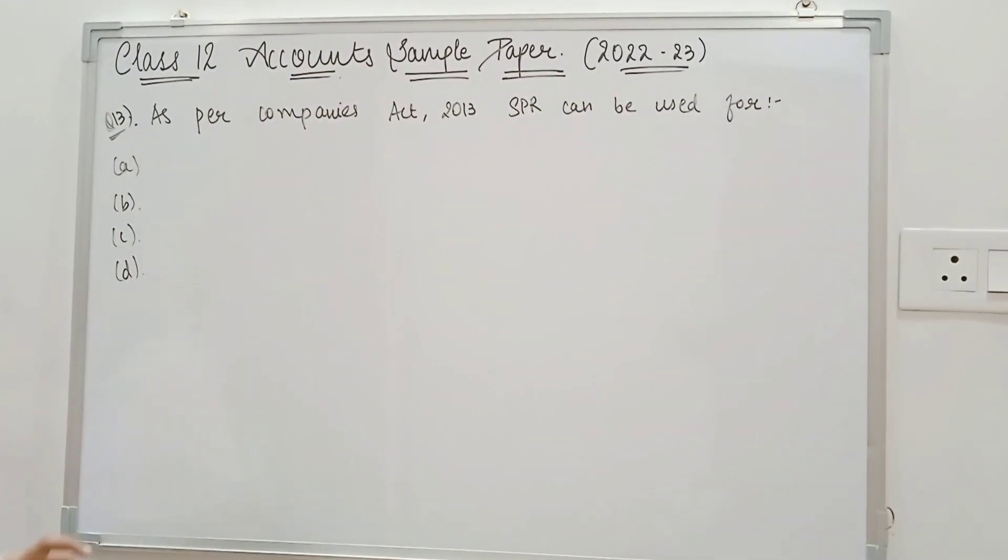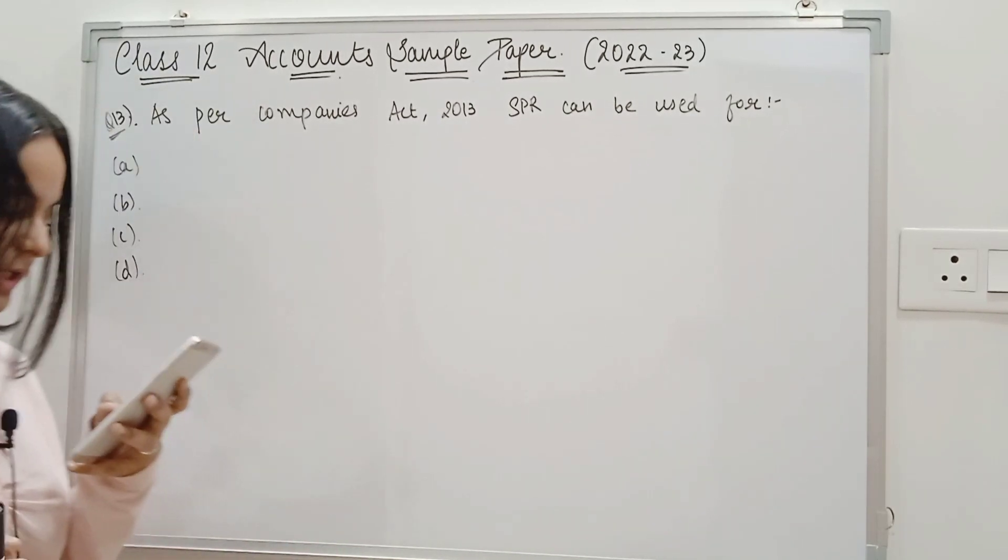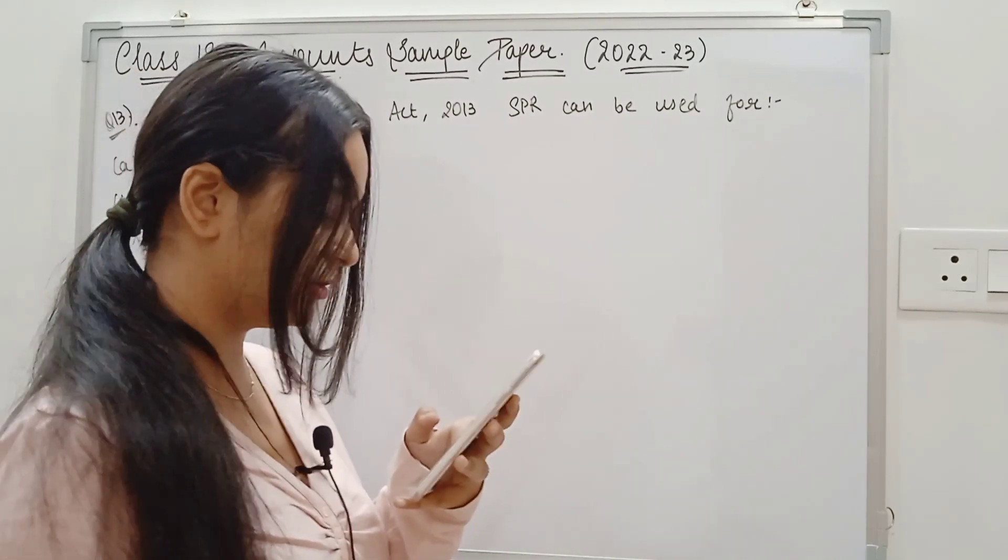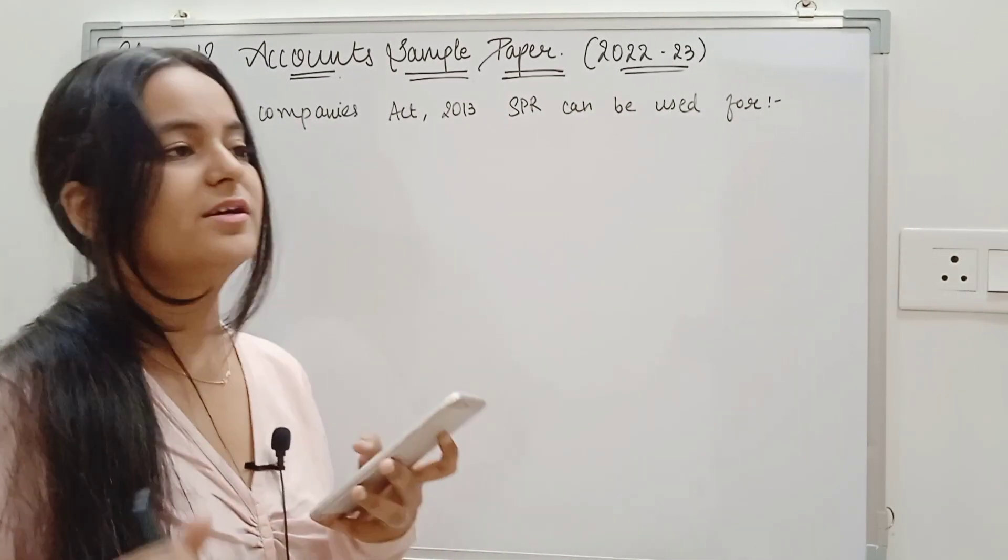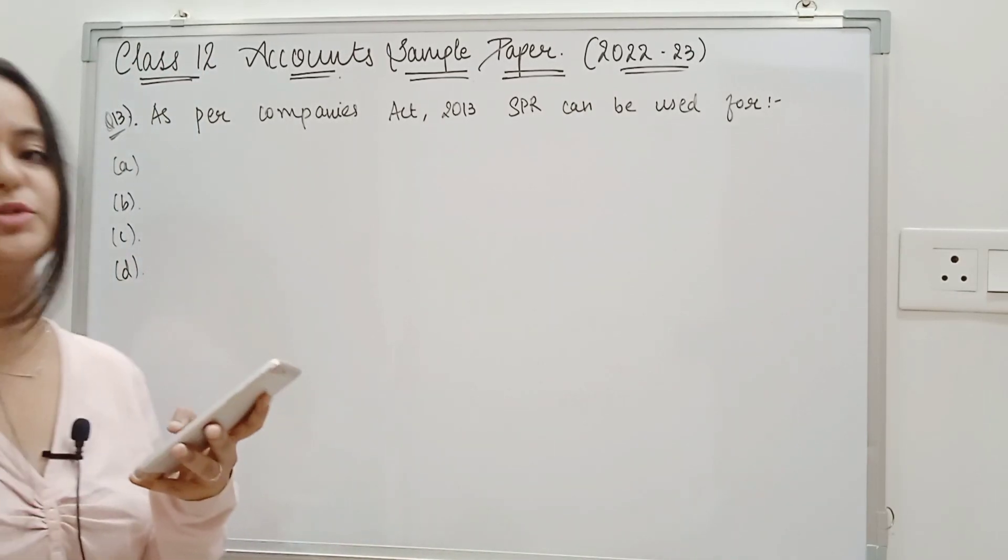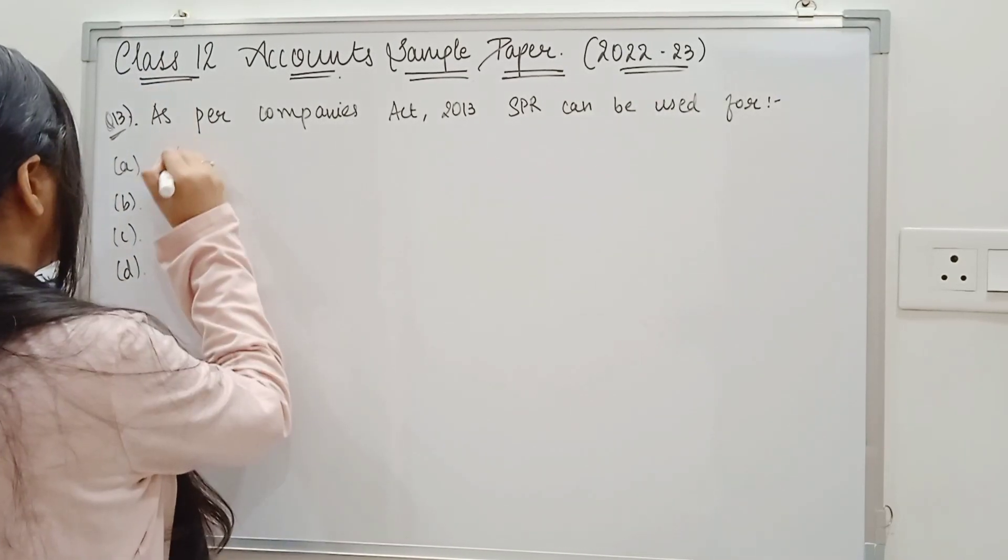So question number 13, I have asked you to use SPR for which purposes. The first option is issuing bonus to existing shareholders to convert partly paid up into fully paid up bonus shares. Sometimes we can't use SPR for partly paid up shares. A is not the correct option.